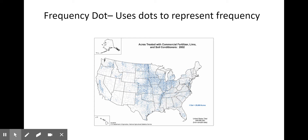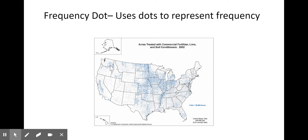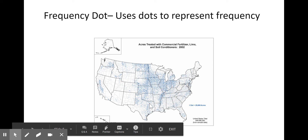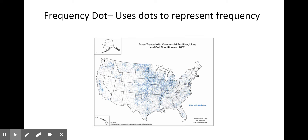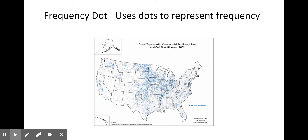You can see the Central Valley of California, the eastern half of the state of Washington where we get apples and cherries, and of course the Midwestern United States where we see lots and lots of farmland. Dots are used to represent an instance of something or a specific amount of something. That is called a frequency dot map, or sometimes just a dot map.